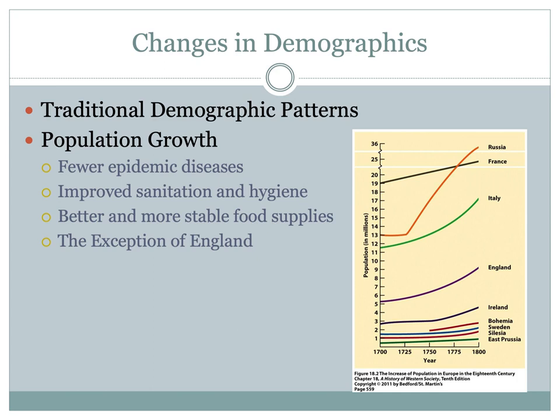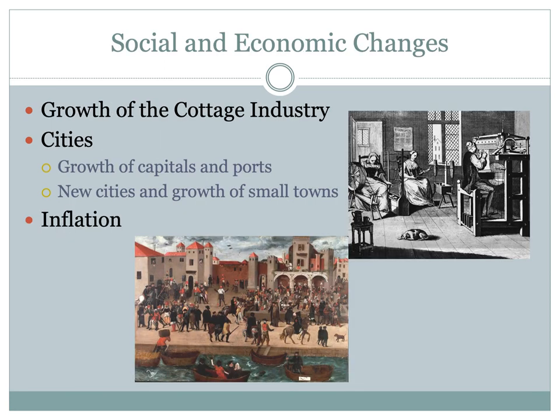The exception to this pattern is England, because England did see both a rise in birth rates and a decline in death rates. The reason for this is that England in general had greater economic opportunities and also more geographic mobility for young people, both of which tended to encourage earlier marriage. And earlier marriage meant that couples were likely to have more children. Now let's look at some of the social and economic changes taking place in the 18th century — some of this content will also be a review from Unit 3.